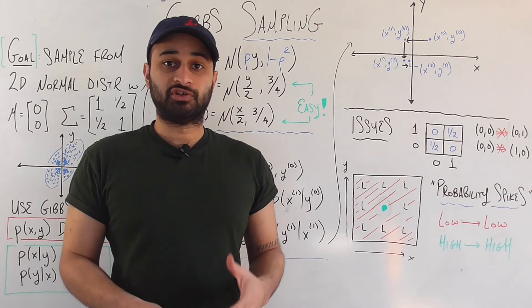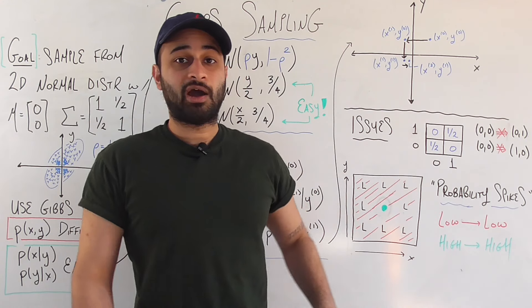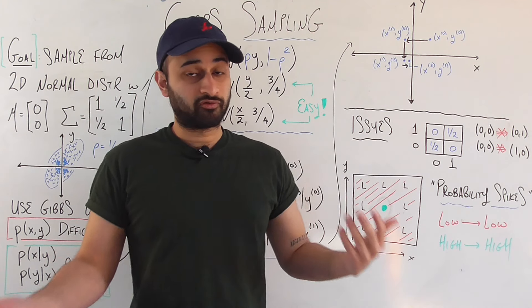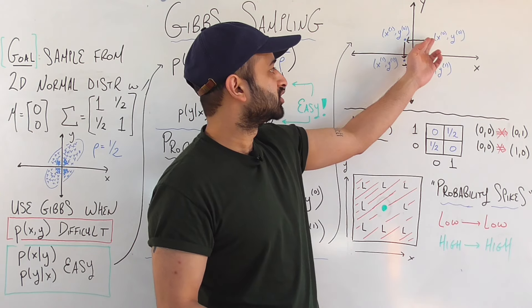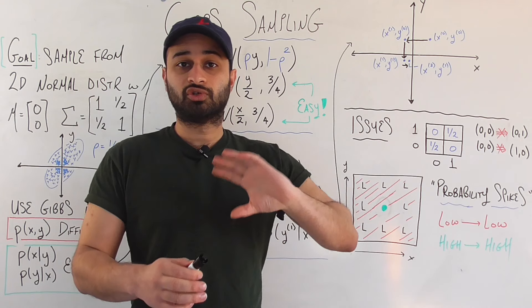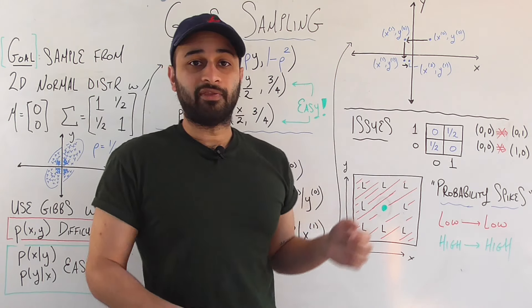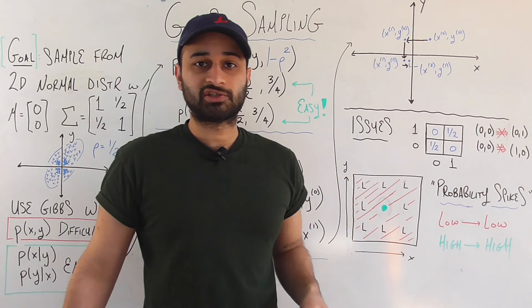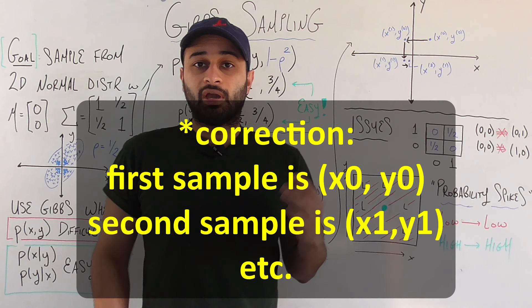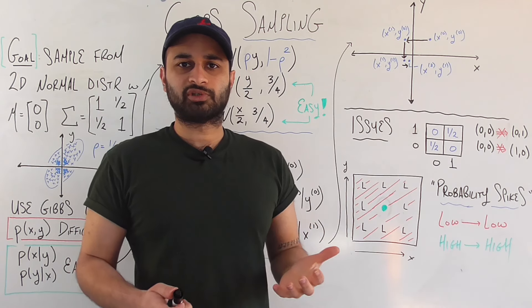This is nicely visualized in the 2D chart. Starting at x₀, y₀, we sample a new x while keeping y fixed — that's equivalent to moving in the x direction. Then we swap: keep x fixed and sample a new y, moving in the y direction. Then swap again — new x, keeping y fixed. We just continue alternating like that, back and forth.